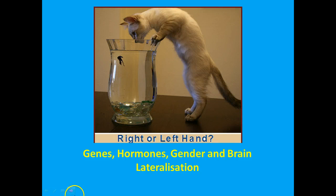Hi, welcome to our third video about the biological approach to psychology. This is all about a biological approach to gender development. Developing gender is the process of identifying yourself as masculine or feminine, but the biological approach emphasises that this is the result of biological processes rooted in genes. For instance, males are almost universally more aggressive in all cultures, which indicates a biological cause.